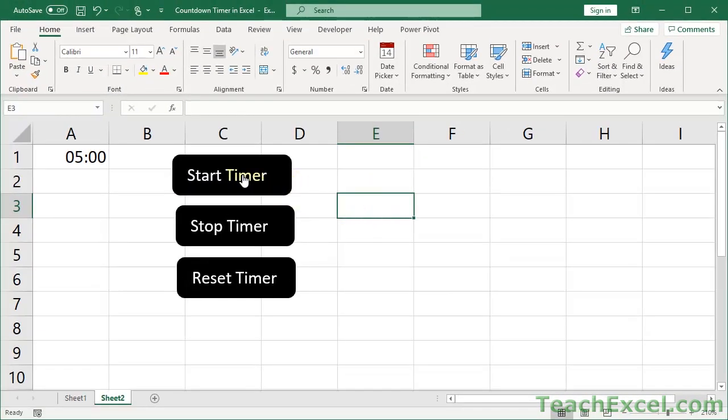And now I can click Start Timer. Stop Timer. And Reset Timer. So if that's all you want and you want it to work at five minutes and you want three buttons just like that, then you're pretty much done. Download the workbook, copy and paste the macros, and you are good to go.